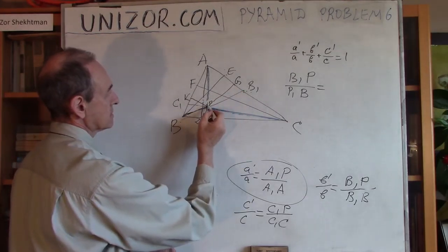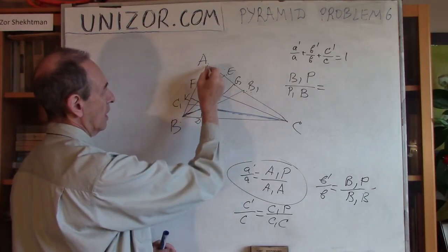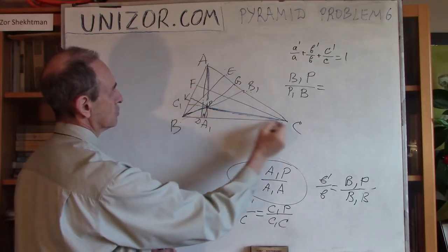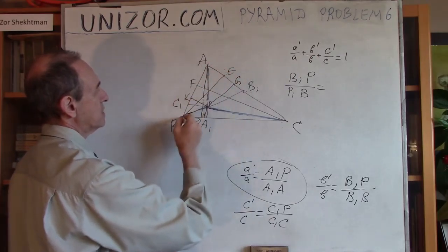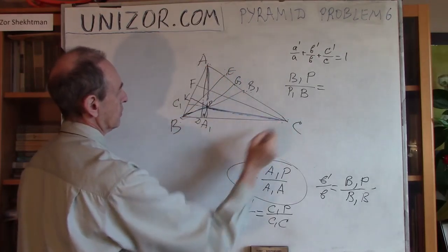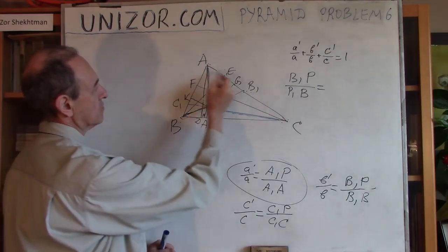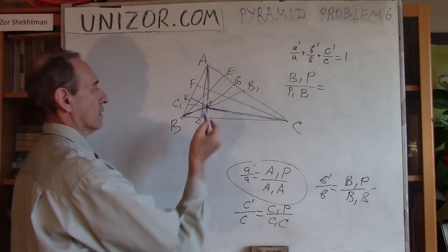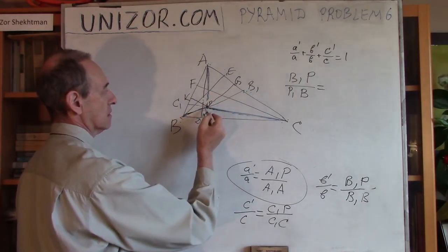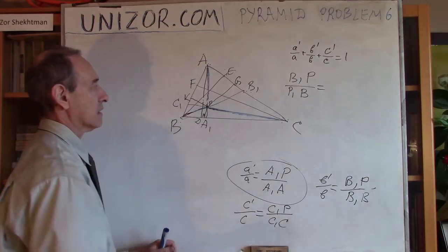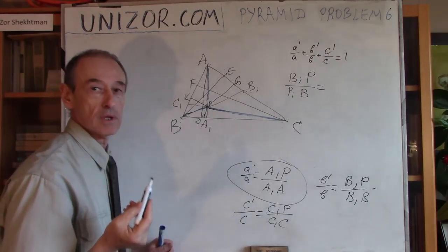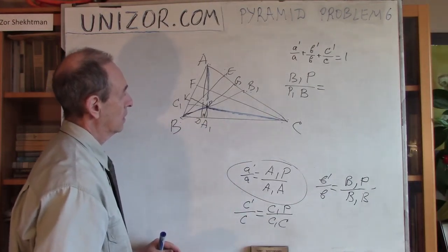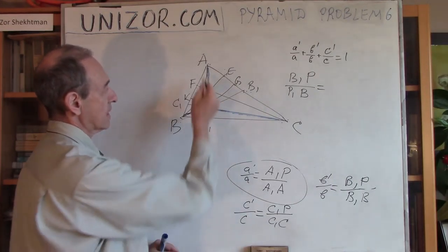This is the ratio of altitudes of triangle APC. The ratio between B1P and B1B is the same as the ratio between GP and EB because these triangles are similar. But PG is the altitude of this triangle, and BE is altitude of the bigger triangle ABC with the same base AC. So the ratio of these altitudes is exactly the same as the ratio of the areas because they have the same base.